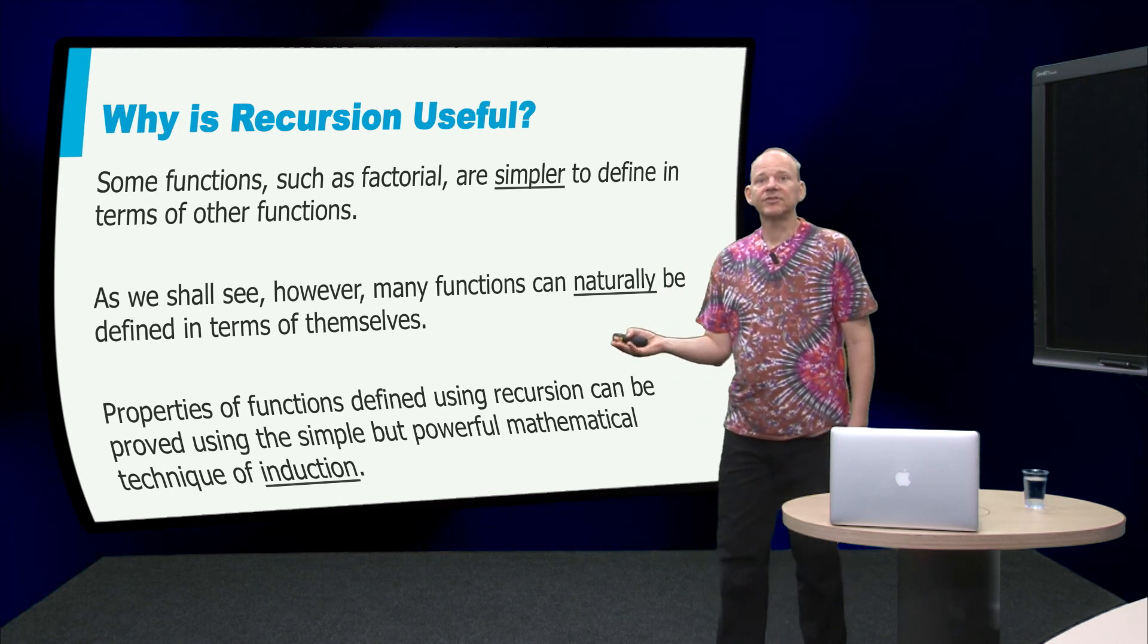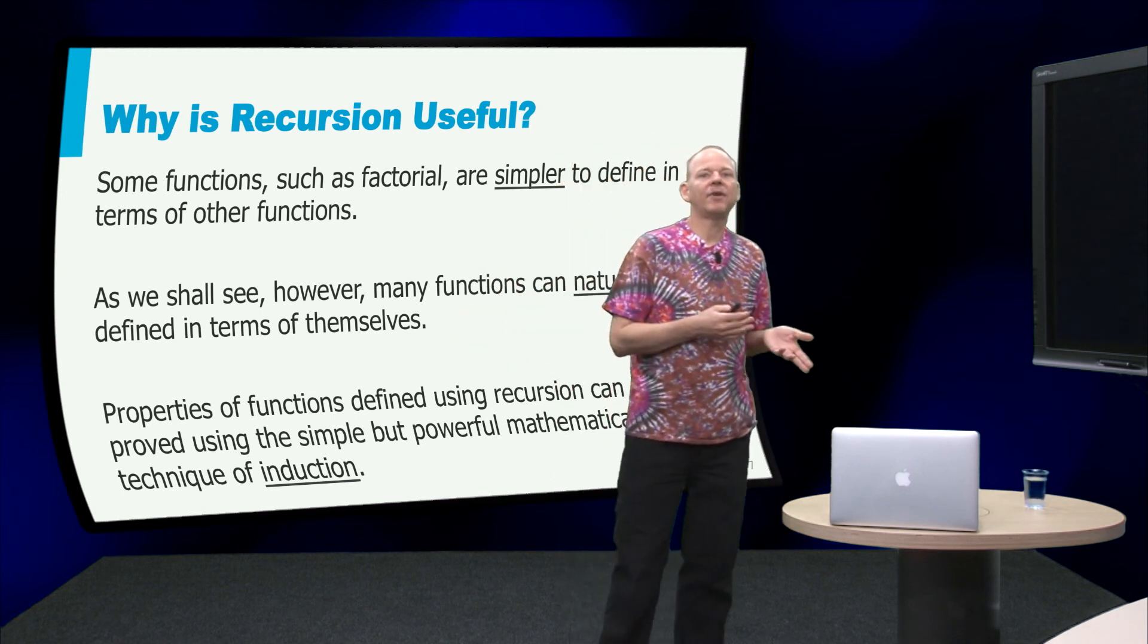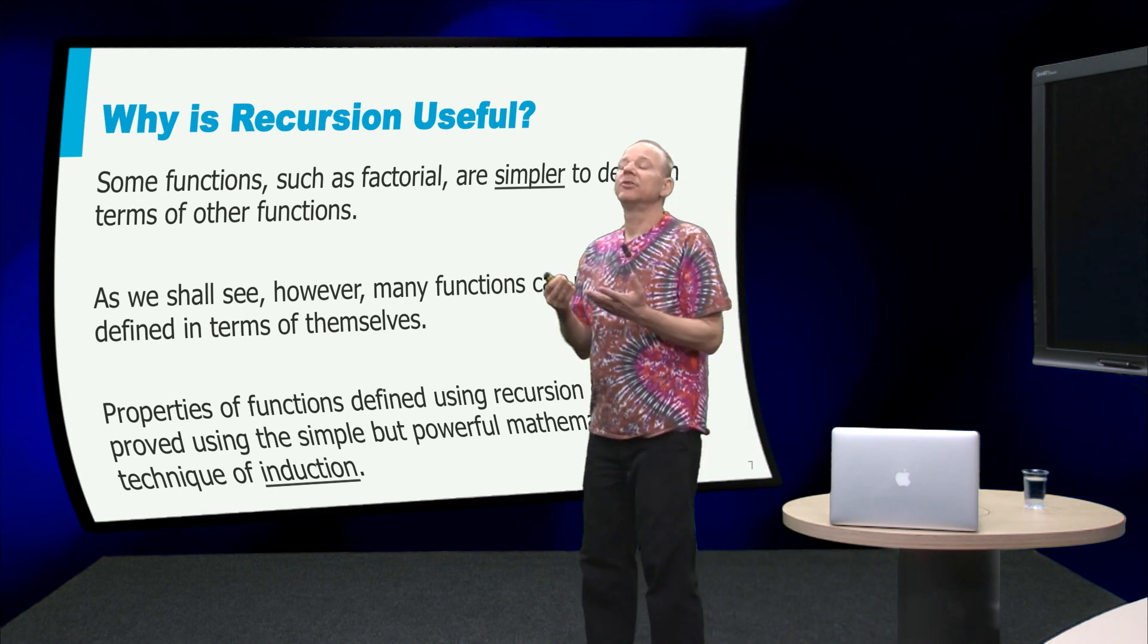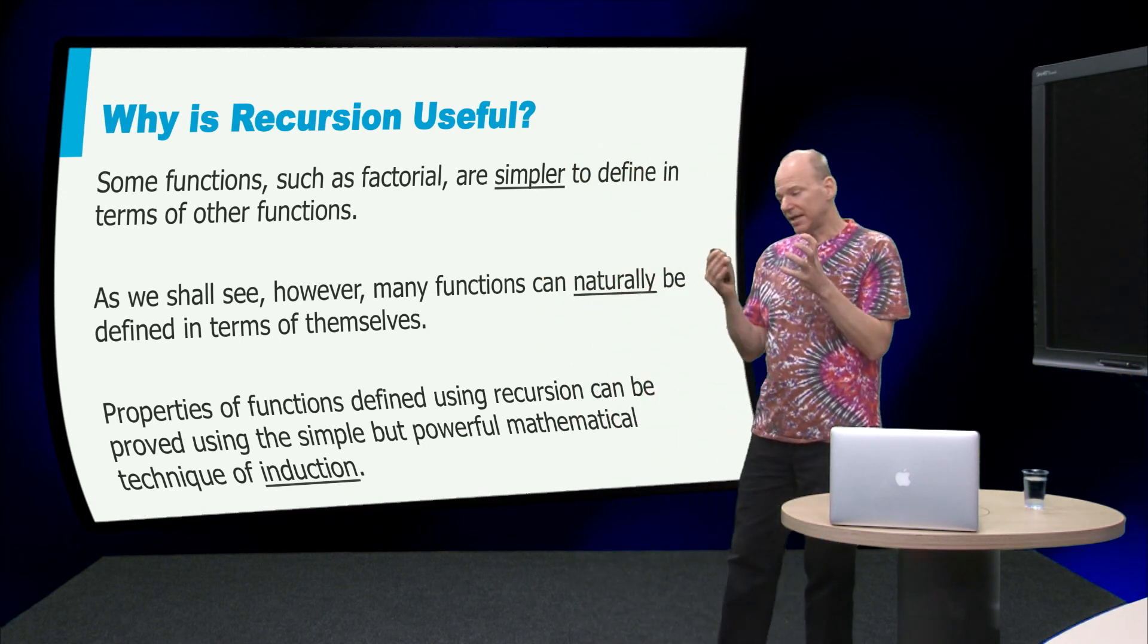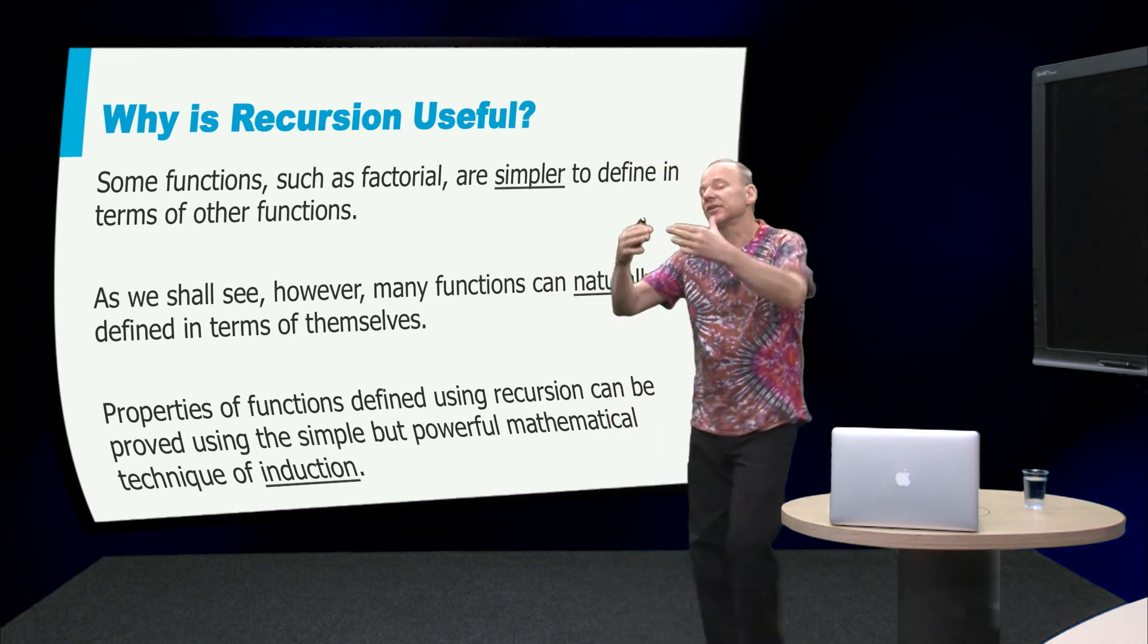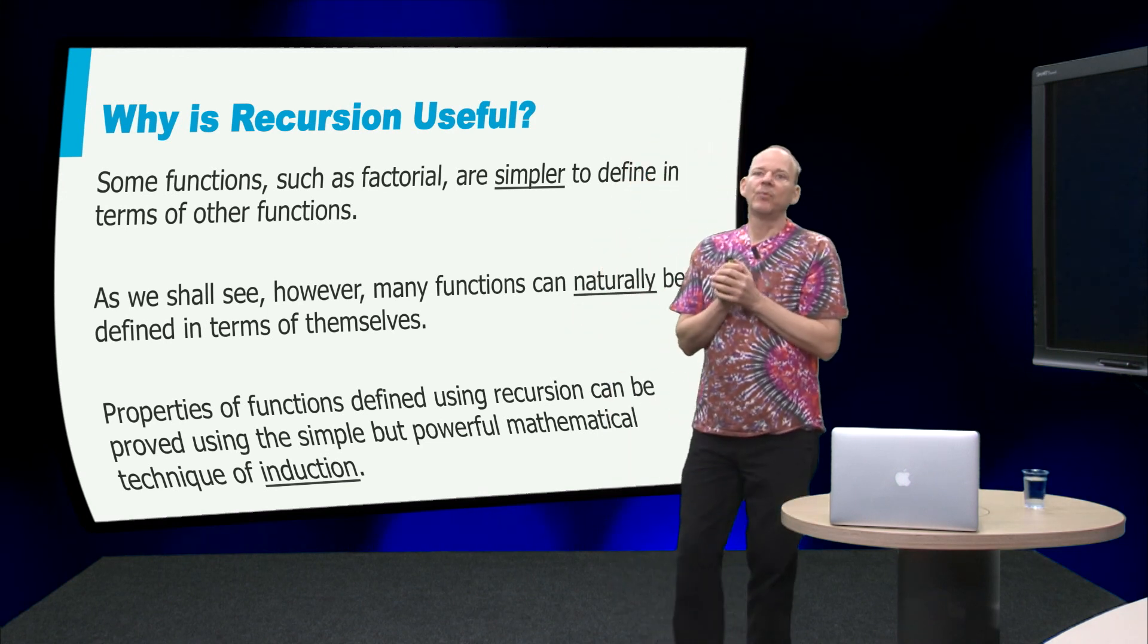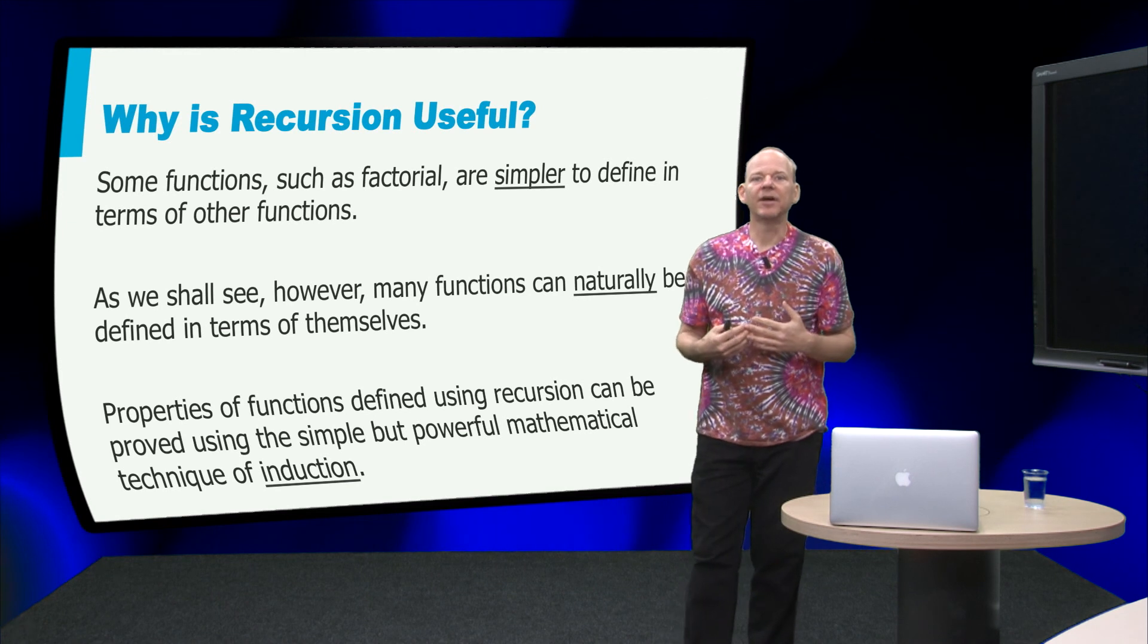So some functions like factorial can be defined either recursively or defined in terms of other functions. And whether you define something using recursion or in terms of other functions or you take this recursion pattern and abstract it as a higher order function and then use it to define another function. That's all a matter of taste. In the end you decide as a developer what is the most readable for other developers.